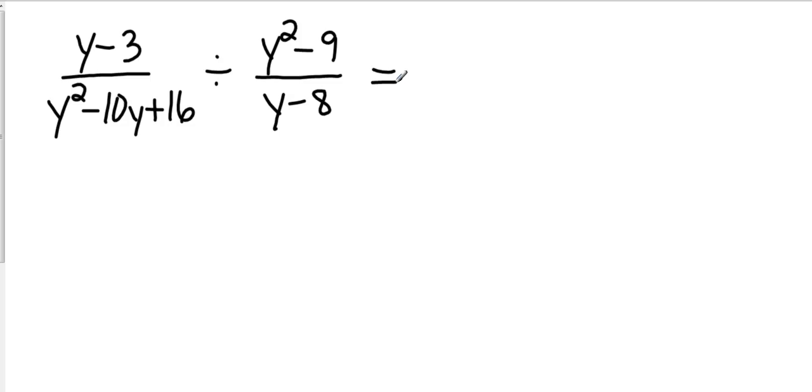When we divide fractions, we never actually divide. We end up multiplying by the reciprocal of the second one. So what I'm going to go ahead and do is I'm going to factor these and then flip the second one. So y minus 3 is just y minus 3. Now I'm going to factor y squared minus 10y plus 16.